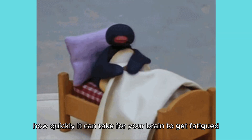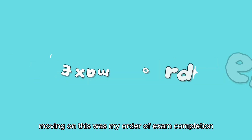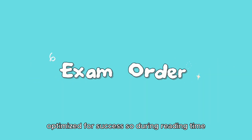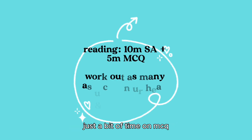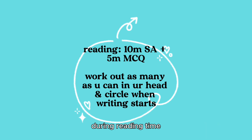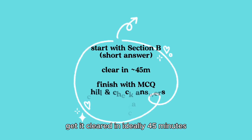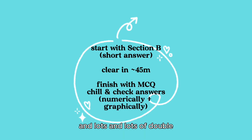Don't underestimate how quickly your brain can get fatigued in the actual final exam. This was my order of exam completion, optimized for success: during reading time, I spent a lot of time on Section B and just a bit on MCQ, so that the moment they said start, I could already circle the answers for about five MCQ questions because I'd worked it out in my head during reading time. Then I'd jump to Section B and spend good time carefully doing that, clear it ideally in 45 minutes, and then take my time on MCQ with lots of double, triple, quadruple checking. That's how I got the scores that I did.